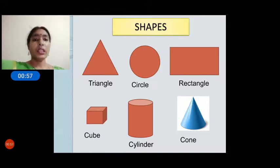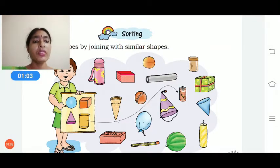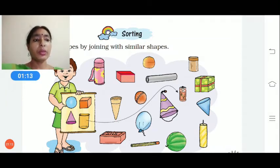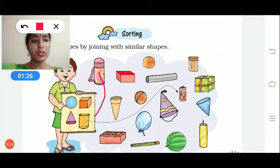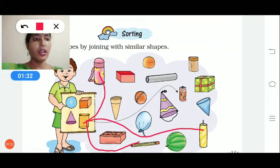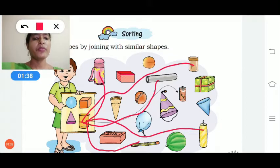Now let's look in your textbook. So many objects are given and you have to match them with similar shapes. The first one — the battery matches with a cylindrical shape. Cylindrical objects include this bottle, this pencil, this candle, this box, and this paper wrap.